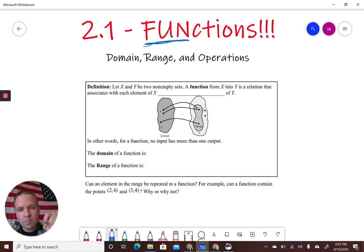All right, so let's let X and Y be two non-empty sets, just meaning they have stuff in them, right? Now, a function from X into Y is going to be a relation that associates with each element of X exactly one element of Y. Exactly one, okay? Wonderful.